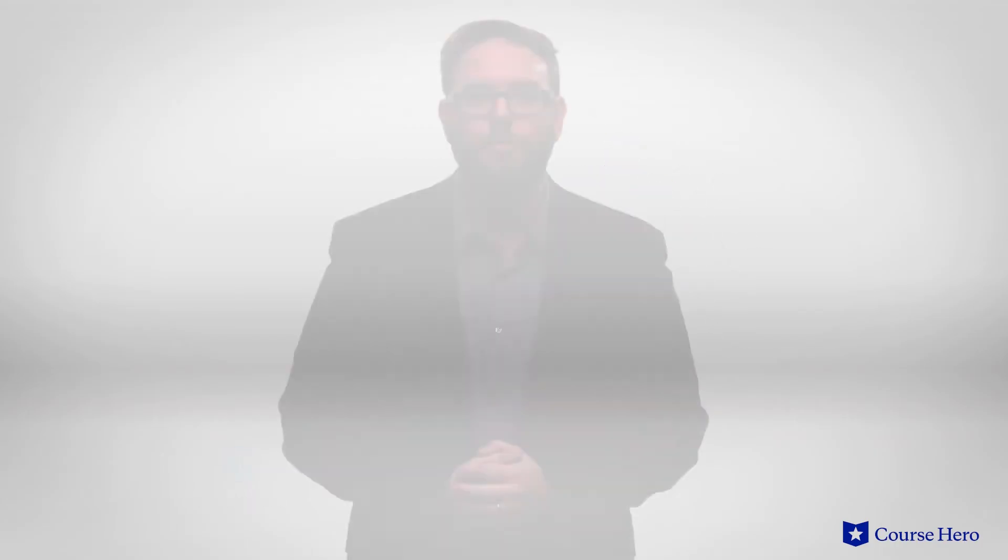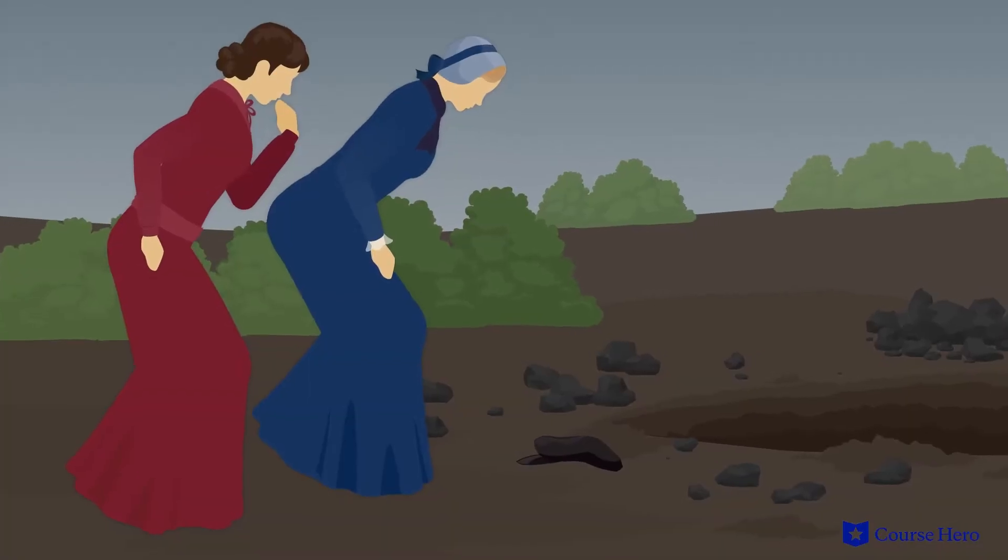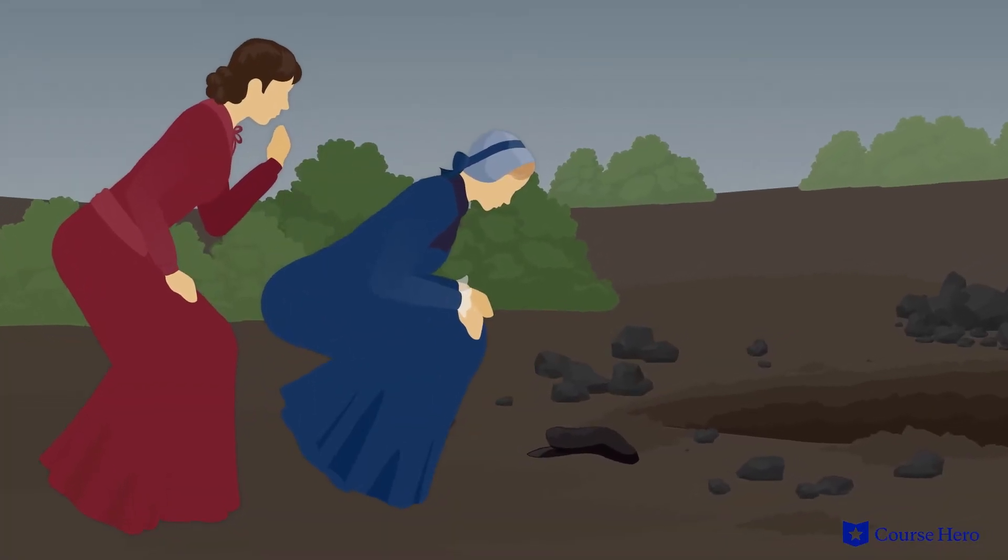In the falling action, Mr. Bounderby learns Louisa did not actually have an affair, but still demands she get over her emotional breakdown and come home right away. Louisa does not return, and the marriage effectively ends. Sissy and Rachel search for Stephen and find he's fallen into a coal pit. He's pulled from the pit, but he succumbs to his injuries and dies. Sissy helps Tom escape after he's revealed as the bank robber.